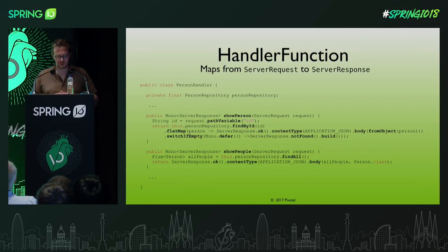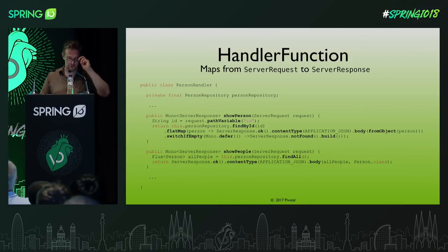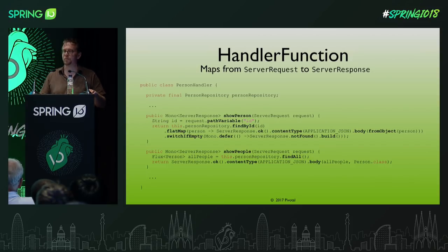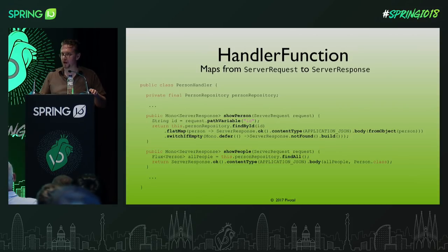The second example is probably a bit easier to understand. We just get a request, we don't even use the request, and we just go to our repository and say find me all the people, then return that as JSON. If you have any questions, raise your hand. There's a person running around with a mic.